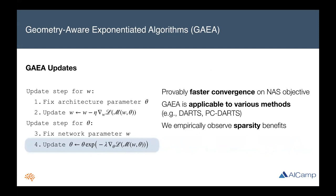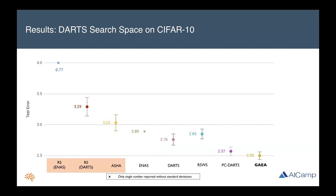In our paper, we show that the exponential gradient update has provably faster convergence on non-convex objectives like those used in NAS, and this approach is applicable to many different NAS methods. Looking at how GAIA performs on standard benchmarks: on the DARTS search space for image classification on CIFAR-10, standard hyperparameter optimization methods like random search and ASHA are shown on the left and weight sharing approaches on the right. Weight sharing approaches do slightly better than hyperparameter optimization, and with the geometry-aware approach in GAIA, we're able to improve upon the state of the art for this search space.